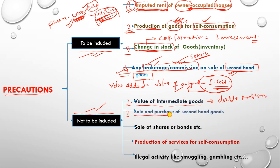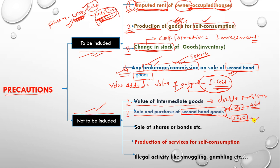The second item not to be included is the sale and purchase of second-hand goods. Second-hand goods means their production already happened in a previous year and their value was already included in national income at that time. For example, if goods were produced in 2019, their value was included in national income in 2019. If they are sold as second-hand goods in 2020, their production has nothing to do with the current year. National income accounts for current year production only, so second-hand goods' value is not added again.